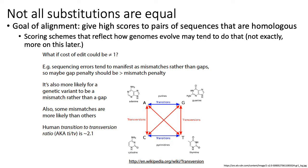Now that we have a basic understanding of sequence alignments, let's talk about more realistic scoring schemes for those alignments. One of the primary goals of sequence alignment historically is to help identify homologous sequences. One of the first applications was sequencing a new genome or gene and finding homologous copies in other organisms using a database of gene sequences. If your goal is to give high scores to pairs of sequences that are homologous, you should use scoring schemes that reflect how genomes evolve.